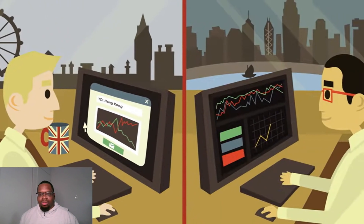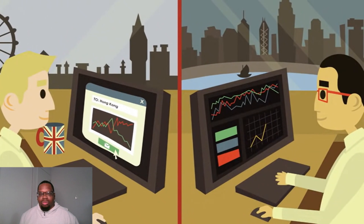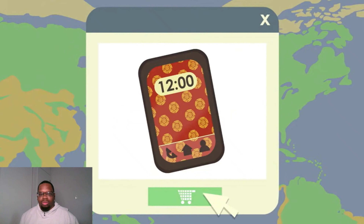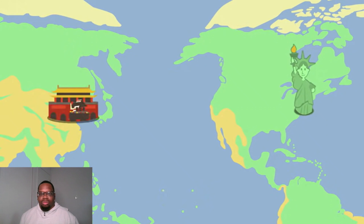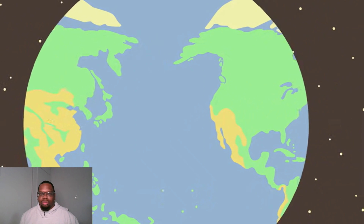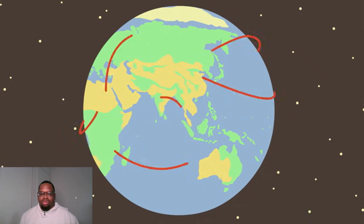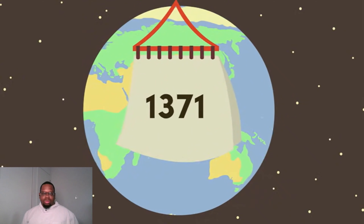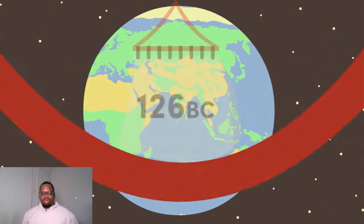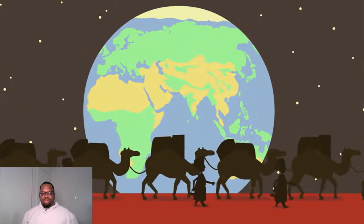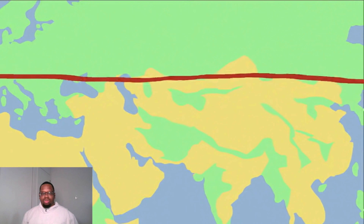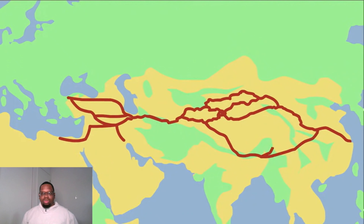A banker in London sends the latest stock info to colleagues in Hong Kong in less than a second. With a single click, a customer in New York orders electronics made in Beijing, transported across the ocean within days by cargo plane or container ship. The speed and volume at which goods and information move today is unprecedented — but global exchange itself is older than we think, reaching back over 2,000 years along a 5,000-mile stretch known as the Silk Road. The Silk Road wasn't a single road but a network of multiple routes that gradually emerged over centuries, connecting settlements thread by thread.